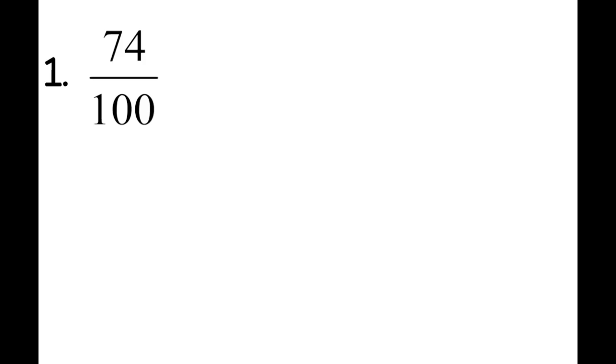We are going to solve these problems a couple different ways today. This one is one of our simpler problems where we have 100 as our denominator already. So we could look at this fraction and say 74 one hundredths. Or if we know our place values, that helps us to know exactly what it's going to look like as a decimal. It's going to be 74 hundredths. And so we just put 7 in the tenths place, 4 in the hundredths place. And that's our answer.